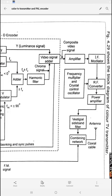Once the video signal is power amplified it is applied to the vestigial sideband filter. In VSB transmission we send the full USB and only a part — a vestige — of the LSB. Since both LSB and USB contain the same information, to minimize the bandwidth we send the full USB and just a vestige of the LSB. This technique is called vestigial sideband transmission. Such filtering is done in the vestigial sideband filter, and now your video information is completely ready for transmission.